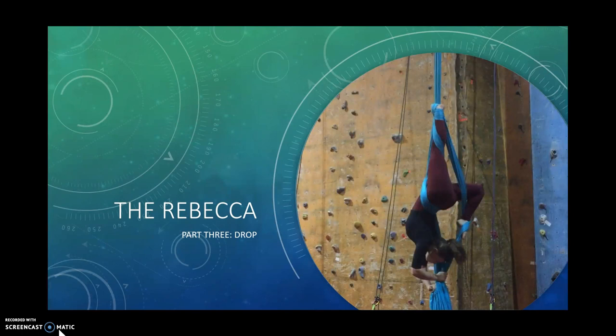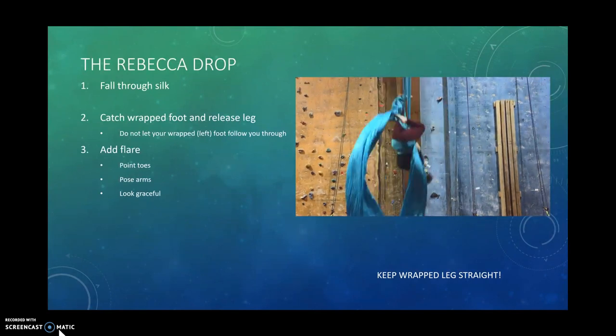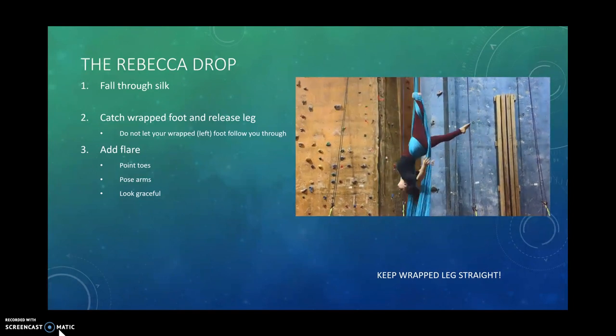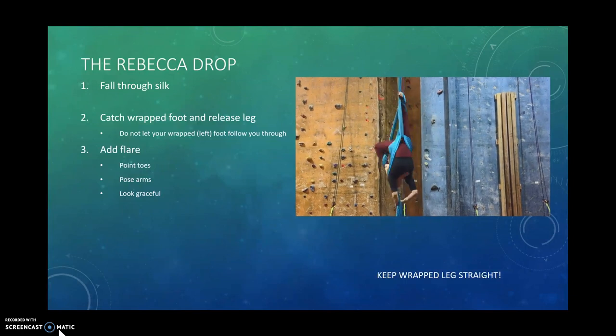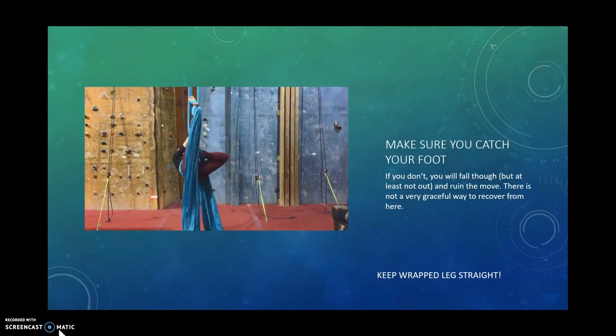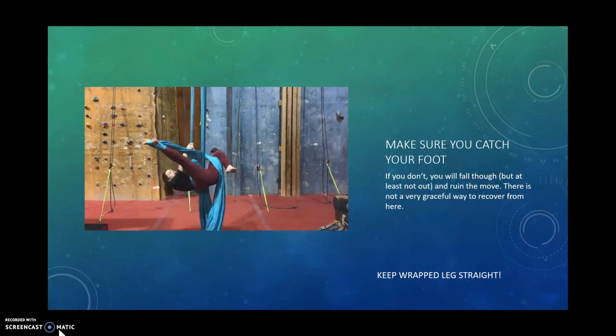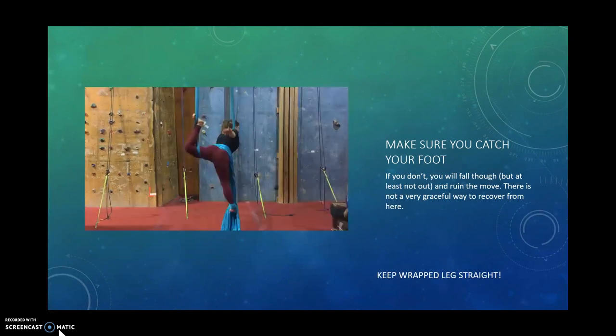Part 3 is the Rebecca Drop. Here, you are going to fall through the silk. You're going to catch that wrapped foot, remove the free one, and then you're at the end of your move, so you can add some flare, point your toes, wrap the silk around, put your foot on your head, and just do about whatever you want. Make sure you catch that wrapped foot and release the other. If you go through, it won't look that graceful. Higher up in the air, it will be harder to get out.